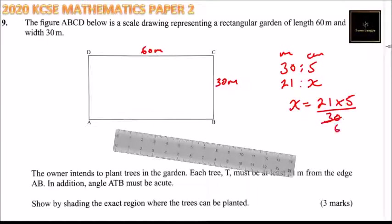So we say X is equals to 21 multiplied by 5, you divide by 30. So we divide there by 5, you get 6. By 5 we get 1, by 6 we get 1, by 6 we get 3.